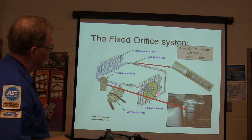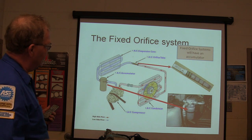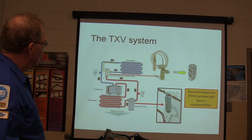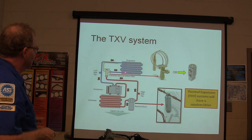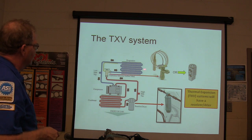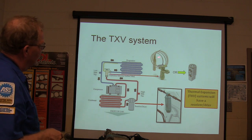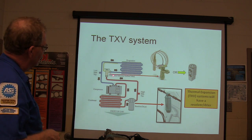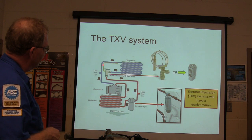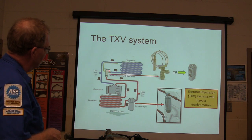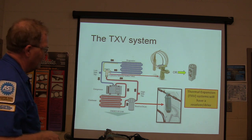It changes from a gas back to a liquid in the condenser and gives up heat. There's your TXV system — thermal expansion valve. A lot of the time you'll have a little bulb here that's actually sensing the temperature of that tube, and that's what causes the orifice to change shape.